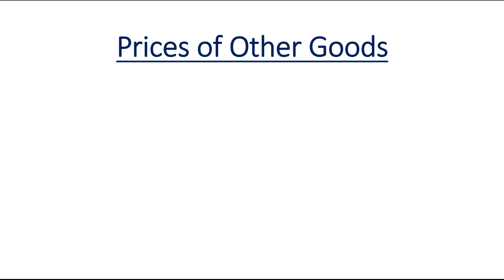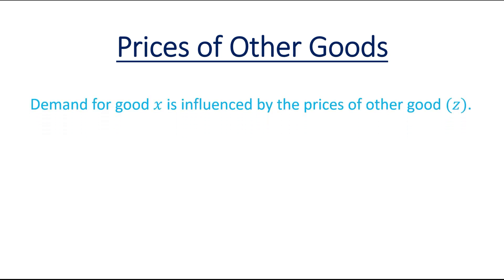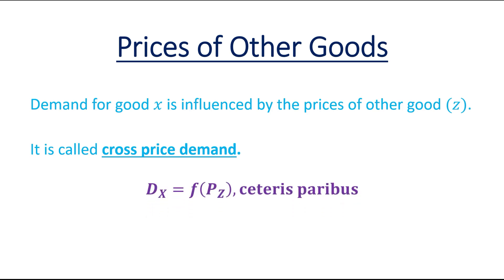The second factor is Prices of Other Goods, or we can say Prices of Related Goods. Demand for good x is influenced by the prices of other goods. Let's assume the other good as good z. This is called Cross Price Demand. We can write: demand for good x is a function of price of good z, ceteris paribus. This means that demand for good x depends on the price of good z, while other factors affecting demand are assumed as constant.